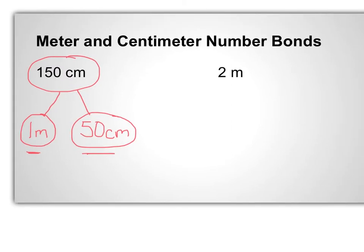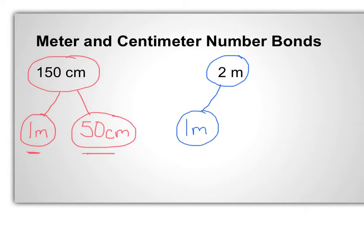If I look at 2 meters, I can think of that in terms of 1 meter, and then instead of having just a second meter, I can think of it as also having 100 centimeters. So 1 meter and 100 centimeters is the same as 2 meters.